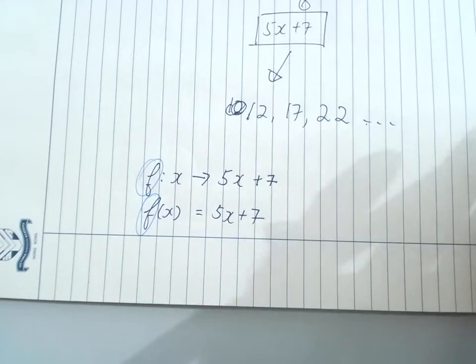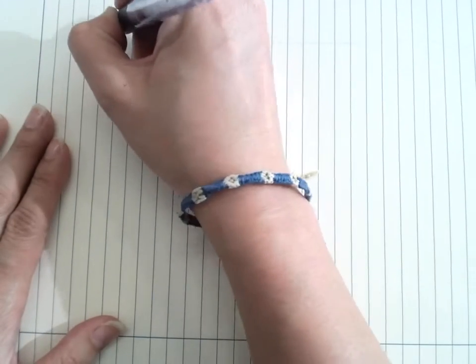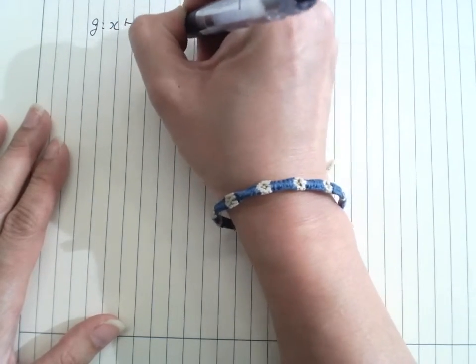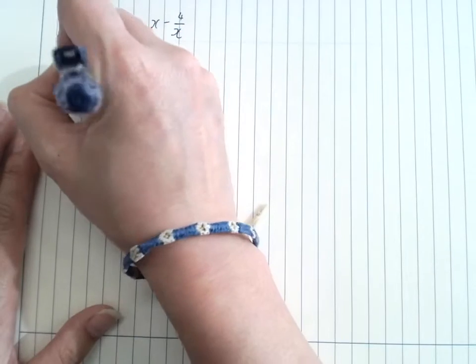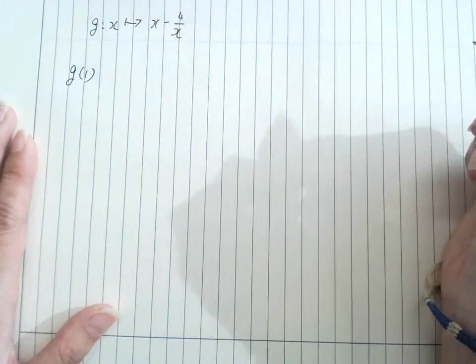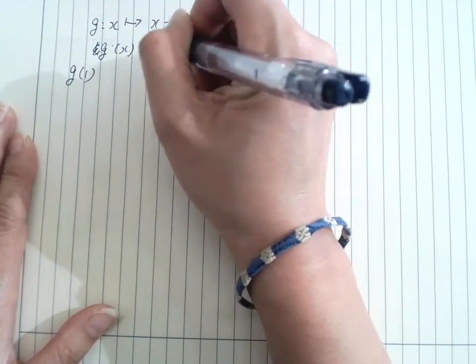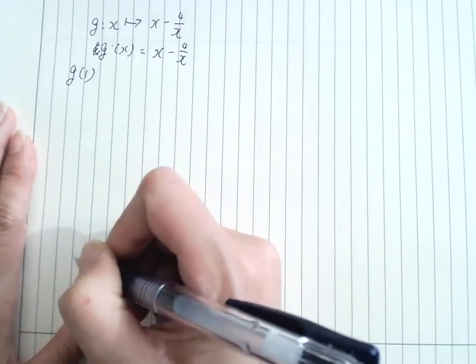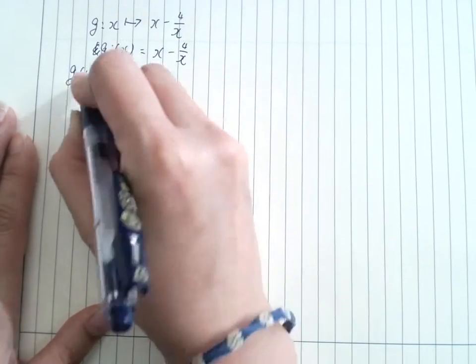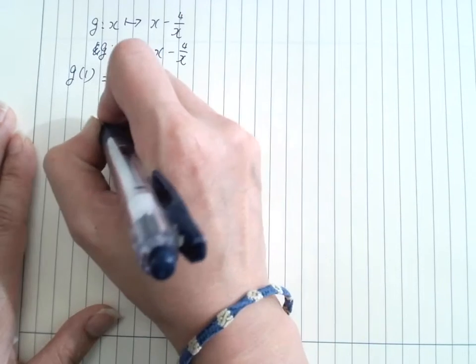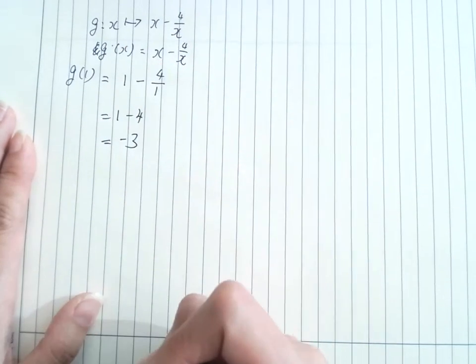For example, if we were given a function g(x) and I want to find g(1), before we start I'll put it into the form I'm more familiar with. Then we substitute, replacing the x with 1. Nice and easy.